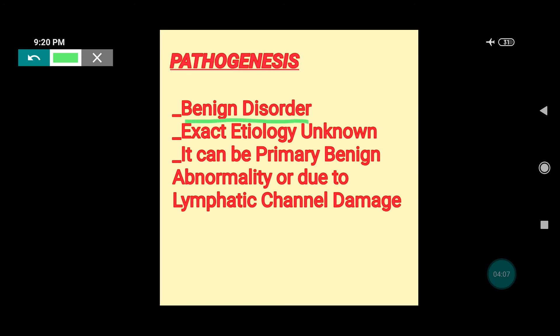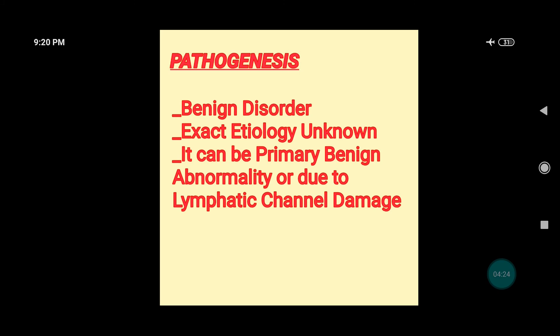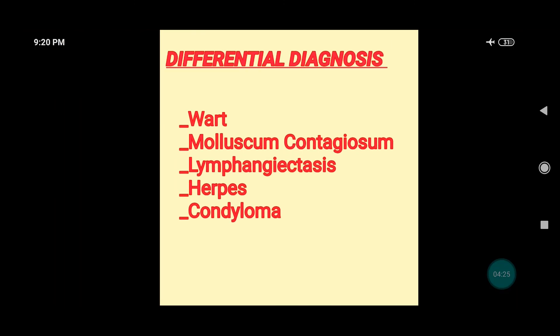Regarding the pathogenesis of lymphangioma circumscriptum: it is a purely benign disorder and the etiology is unknown. It can be a primary unknown benign abnormality, or it has been observed that it can form due to lymphatic channel damage.